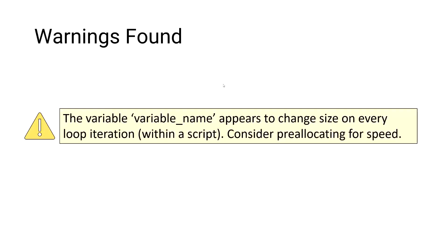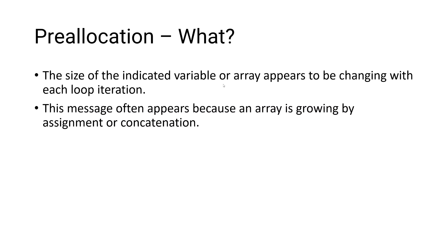If you're fairly new to programming, particularly in MATLAB, you may have encountered this warning before when working with loops: "The variable [variable name] appears to change size on every loop iteration within a script. Consider preallocating for speed." MATLAB is saying that the size of the indicated variable or array appears to be changing with each loop iteration, and this message often appears because an array is growing by assignment or concatenation, often inside of a loop.